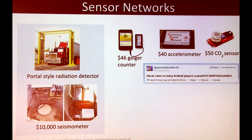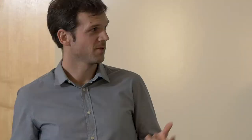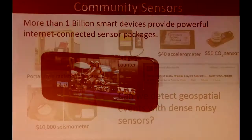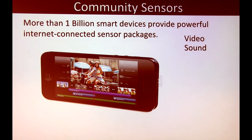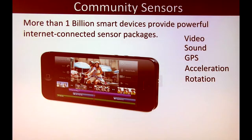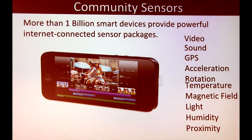Twitter, believe it or not, can be used to detect certain types of events as they move through. The key question we were trying to answer in our thesis work was: can we detect geospatial events with noisy inputs? Smartphones are really helpful for deploying sensors around the world, and one useful property is that they're extremely prevalent in areas that don't have infrastructure money — places where you can find networks of smartphones that wouldn't have traditional infrastructure.